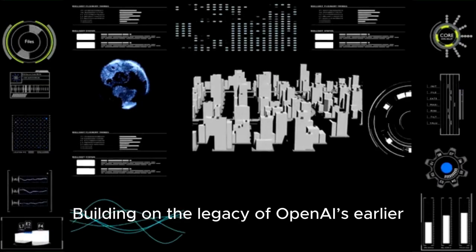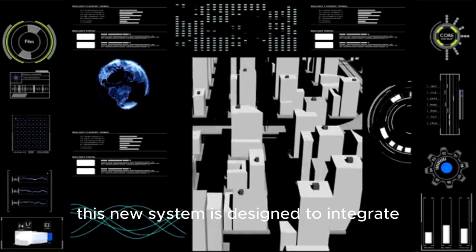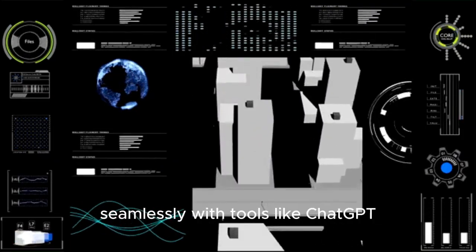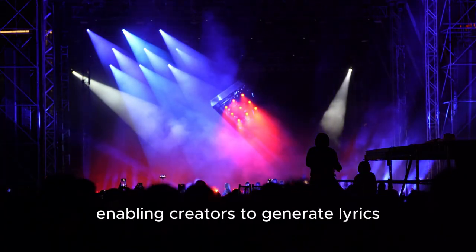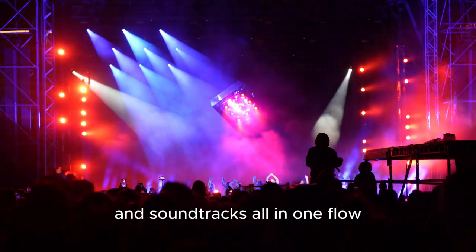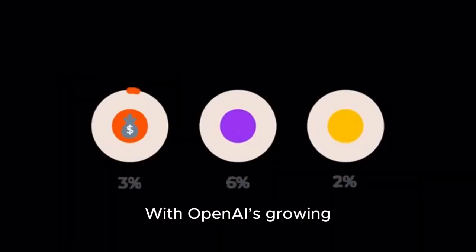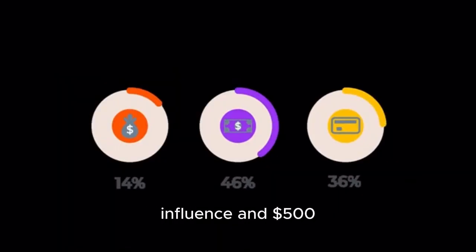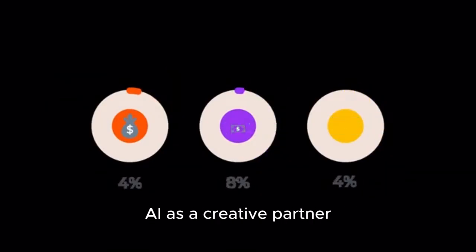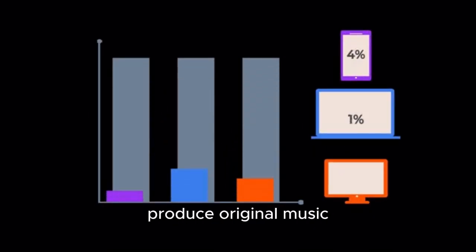Building on the legacy of OpenAI's earlier Jukebox project, this new system is designed to integrate seamlessly with tools like ChatGPT and Sora, enabling creators to generate lyrics, visuals, and soundtracks all in one flow. With OpenAI's growing influence and $500 billion valuation, this marks a bold move to position AI as a creative partner, reshaping how artists, filmmakers, and content creators produce original music.